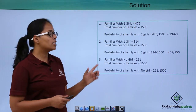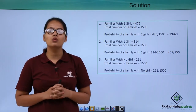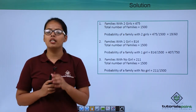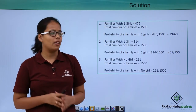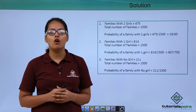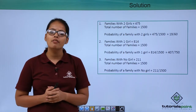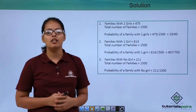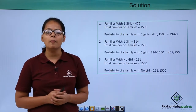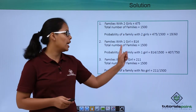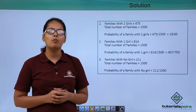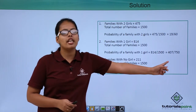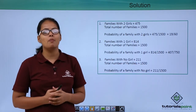In the next part, you need to consider only those families which have one girl and one boy. There are 814 families with one girl, and the total number of families is 1500. So the probability in this case will be 814 divided by 1500, which simplifies to 407/750.